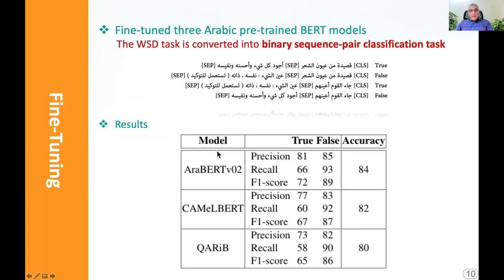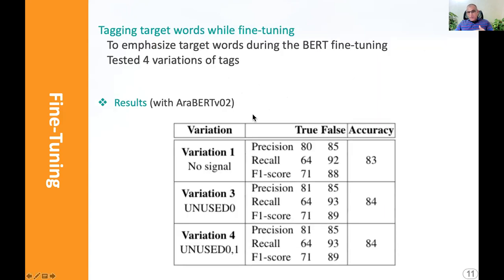We fine-tuned three BERT models on this binary sequence pair classification task: AraBERT, CamelBERT, and Karib. As you can see, AraBERT achieved the best results. We also went back to fine-tune BERT with different tagging of the target words in context, but we couldn't improve more than one percent, and as you see here, the scores are also not bad.